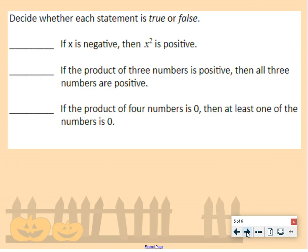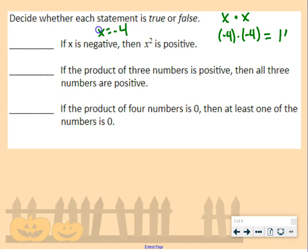On the back of your notes, we have to decide whether each statement is true or false. First: if x is negative, then x squared is positive. Let's say x is negative 4. x squared means x times x, so we do negative 4 times negative 4. A negative times a negative is a positive, giving us positive 16. So this statement is true.